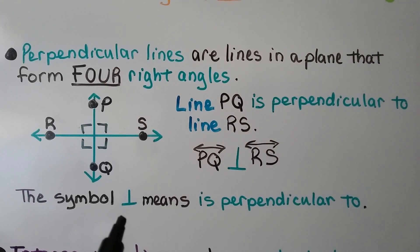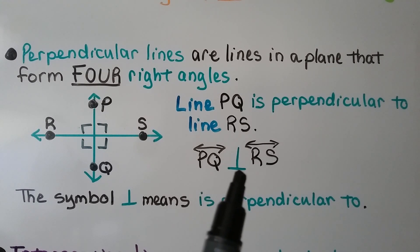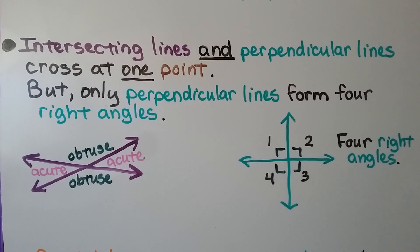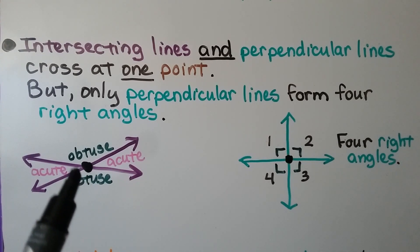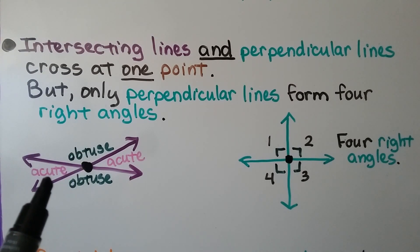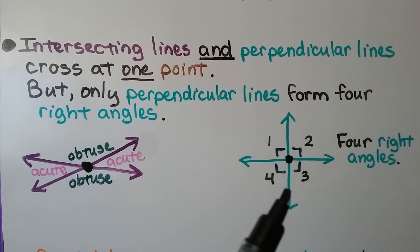This upside-down capital T means 'is perpendicular to.' Line PQ is perpendicular to line RS. Intersecting lines and perpendicular lines both cross at one point, but only perpendicular lines form four right angles. Here we have two intersecting lines — they make an obtuse angle, an obtuse angle, an acute angle, and an acute angle. But these perpendicular lines form one, two, three, four right angles.